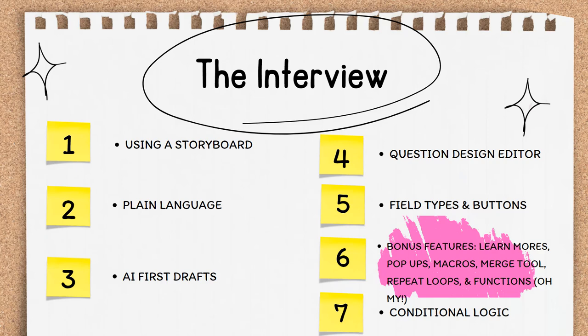Welcome to Video 6 of Section 3, Focusing on the Interview. This video is a catch-all of a bunch of really cool features in A to J Author. This video will have 6 mini-segments covering each of the bonus features shown here. We'll talk about the just-in-time learning features of learn mores and pop-ups. We'll cover the ways to call up and manipulate data within the interview with macros and functions. Then we'll talk about easing the authoring burden with the merge tool. Finally, we'll cap off this section with repeat loops, which let you gather the same types of information multiple times from an end user.